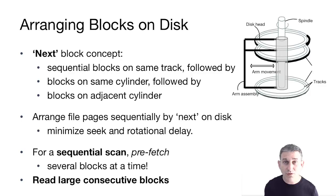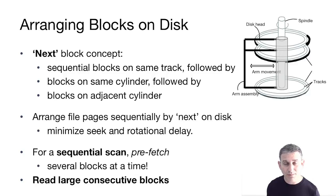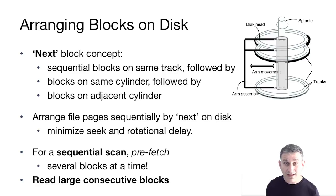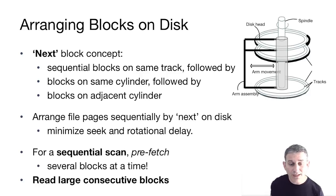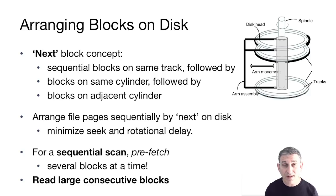When talking about blocks on disk, it's important to have a notion of how close they are to each other — we define a notion of 'next.' Sequential blocks on the same track are considered very close: the next block is the one that rotates under the head after the current one. When we exhaust blocks on a track, the next closest are blocks on the same cylinder, since we don't need to move the disk arm. Then come blocks on adjacent cylinders, where the head moves only a little. We arrange file pages in order by 'next' on disk so that scanning a file minimizes seek and rotational delays.